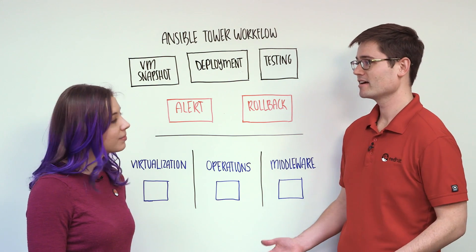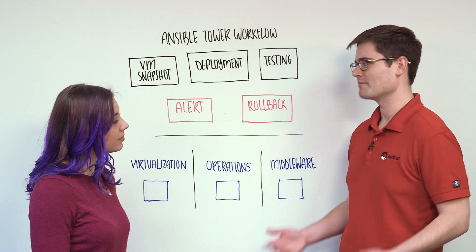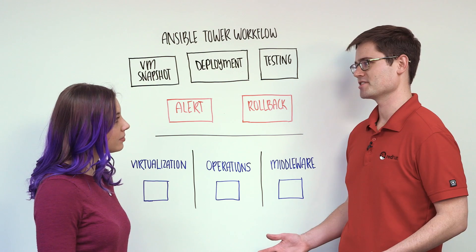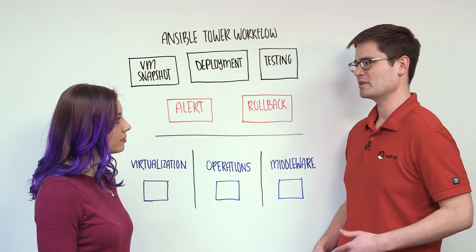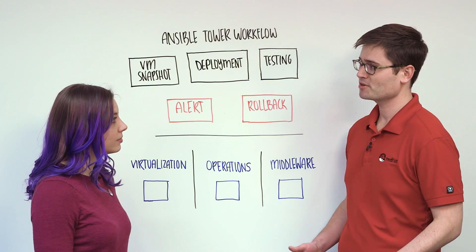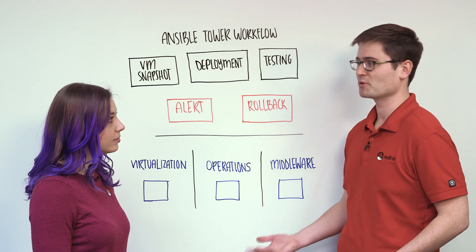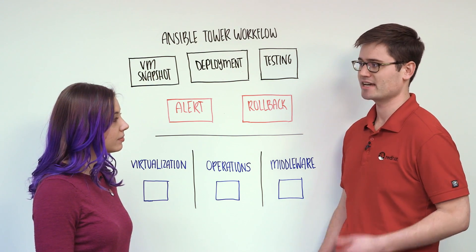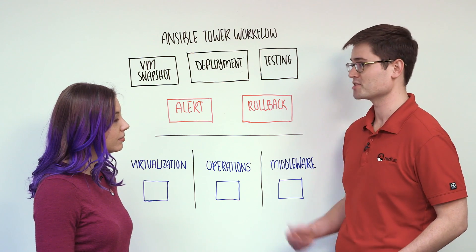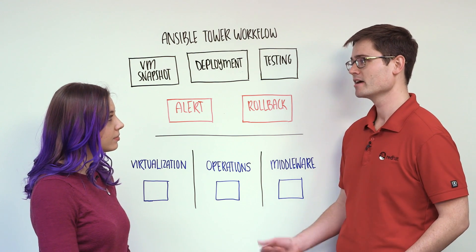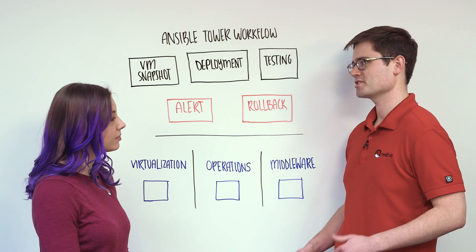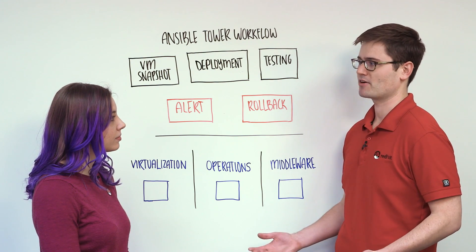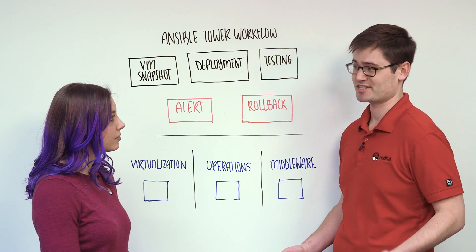Something that's common in IT organizations is pushing out updates, whether that be patching servers or upgrading middleware components, say Apache or JBoss EAP. So before an organization adopts Ansible Tower, how is that traditionally done?